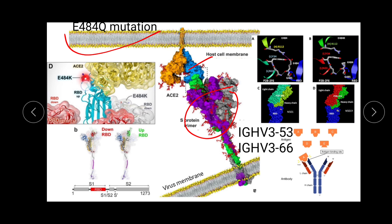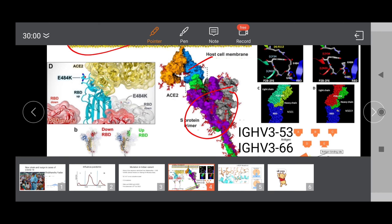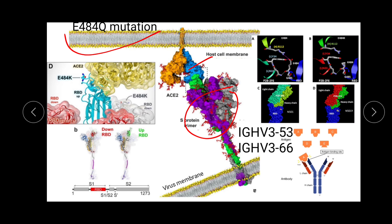Position 484 is one of the most common mutation hotspots globally — the Brazil variant and the Caribbean variant both contain this mutation. What makes it unique is how it affects antibody binding. Position 484 is exposed on the outside, not buried in the binding interface, so antibodies can target it. Most antibodies produced by humans against coronavirus are of the IGHV3-53 type — that stands for immunoglobulin heavy chain variable region 3-53 — and about 10% of antibodies developed against coronavirus are of this kind.